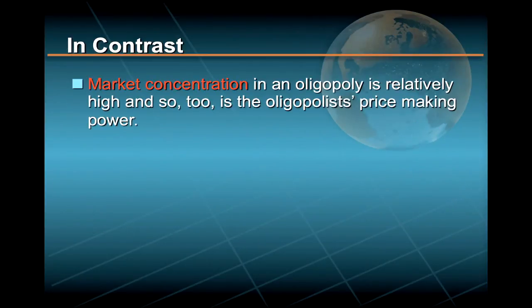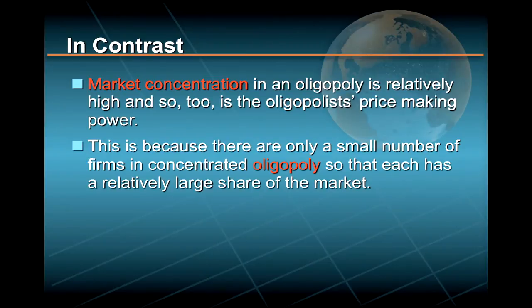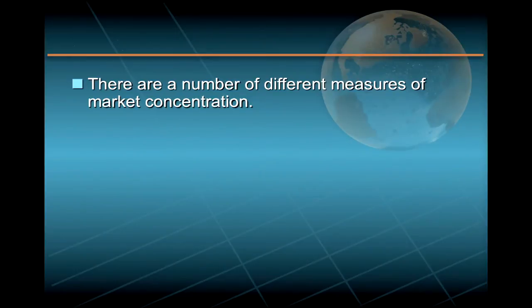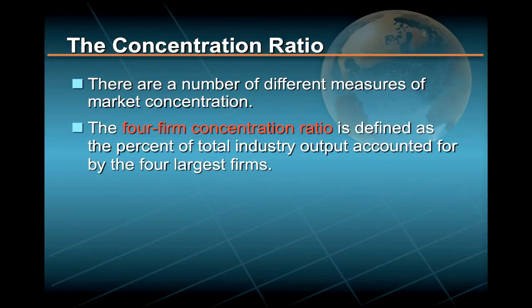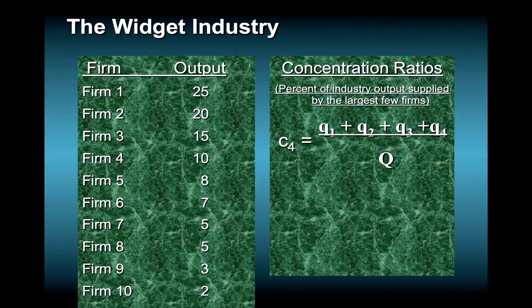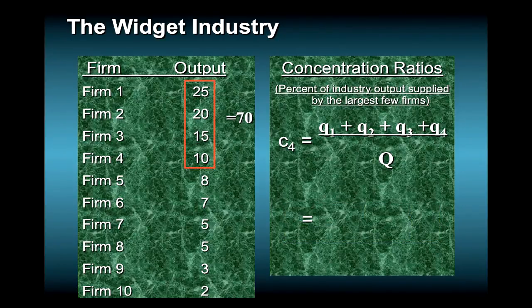In contrast, market concentration in an oligopoly is relatively high, and so too is the oligopolist's price-making power, because there are only a small number of firms, each with a relatively large share of the market. In economics, there are a number of different measures of market concentration. The four-firm concentration ratio is defined as the percent of total industry output accounted for by the four largest firms. For example, if the widget industry has certain market characteristics, its four-firm concentration ratio would be 70%.